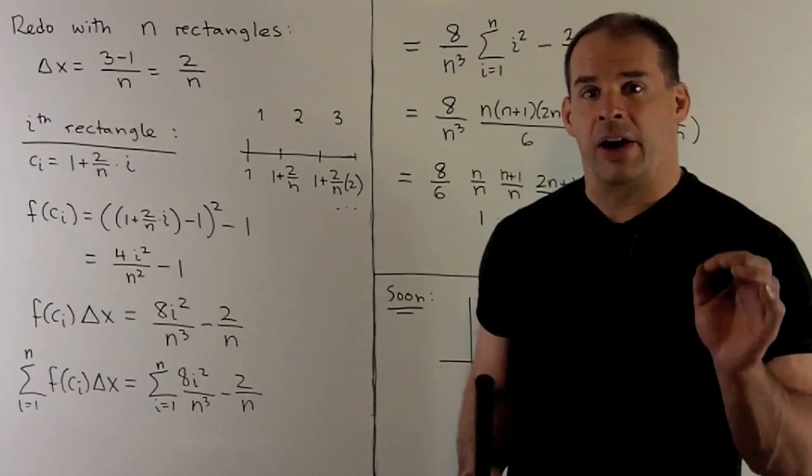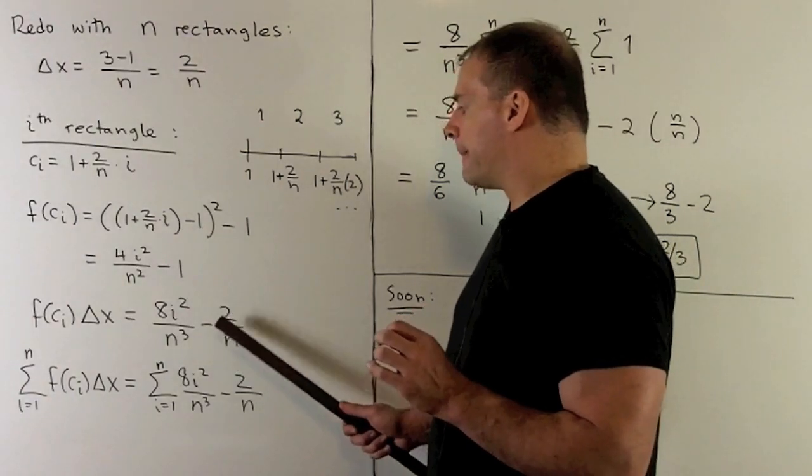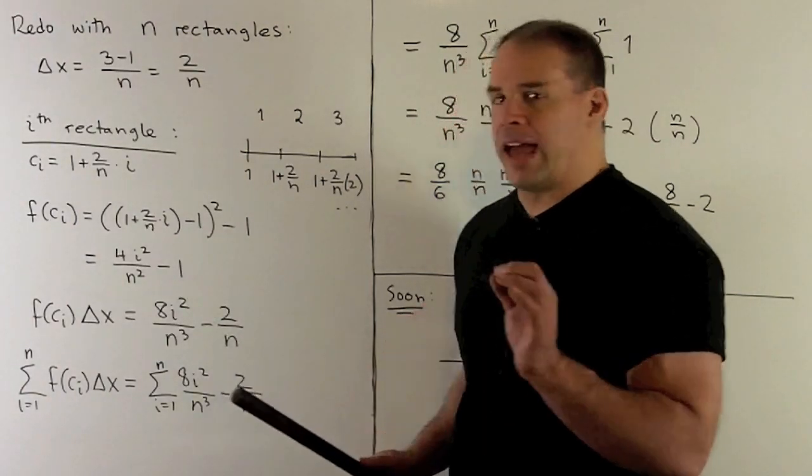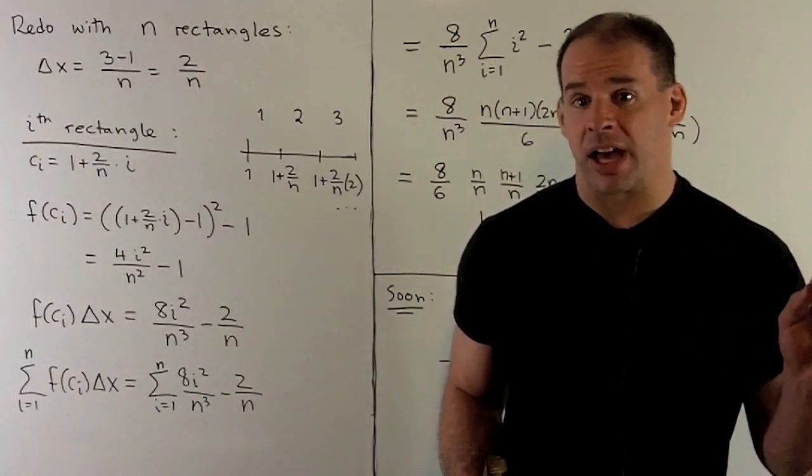Now, to get the signed area, we multiply by delta x. So, I'm going to get 8i squared over n cubed minus 2 over n. Then, we want to take the sum as i goes from 1 to n. So, it's taking the sum of the area of each rectangle.